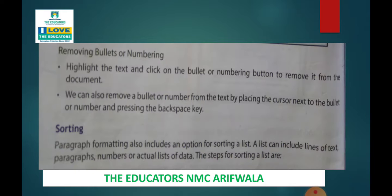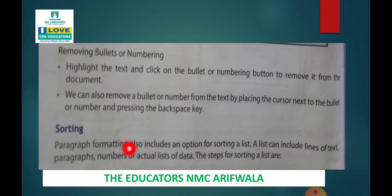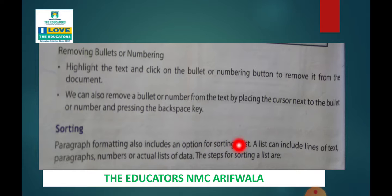Next is sorting. What is sorting? Sorting kya hoti hai? Basically, aapne data ko, aapne text ko arrange karne ke liye alphabetic order me jab hum set kar djeti hai, arrange kar djeti hai sequence ke andher, taw woh sorting kehlati hai. Paragraph formatting also includes an option for sorting a list. A list can include lines of text, paragraphs, numbers, or an actual list of data.